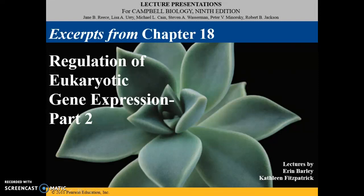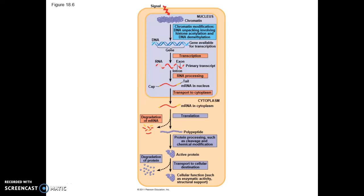Thanks so much for joining me for another edition of Parker Biology. This is part two of regulation of eukaryotic gene expression. In part one we examined several key places where eukaryotes can regulate gene expression including the packaging of their DNA, histone modifications, transcriptional regulation, regulation of RNA processing specifically alternative splicing, and the fact that if RNA gets to stay around for a long time, more of the protein will be made. Here we're going to pick up in the translation realm of things.